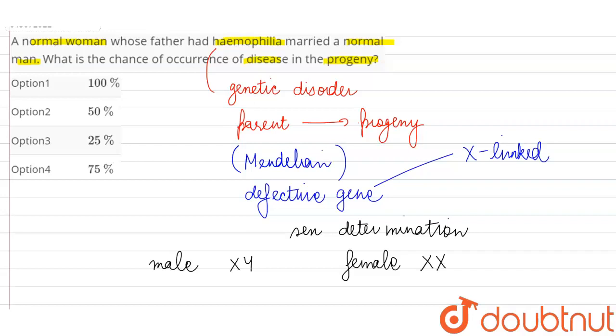So the defective gene which is responsible for this disorder is actually recessive, which means that if the normal gene is present then it will not be able to express itself.